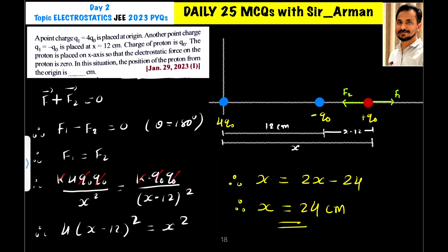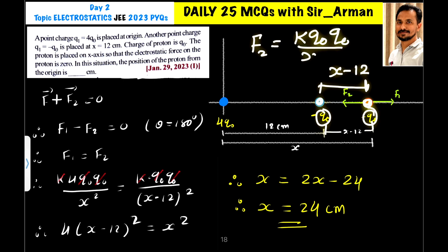What is F2? That is the force on this proton due to this charge. The distance between these two charges is x minus 12. So the force F2 is k times charge of this is Q0, we will only consider magnitude, and the charge of proton here is also Q0, divided by the distance x minus 12 squared.